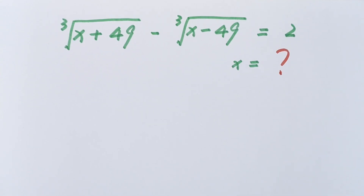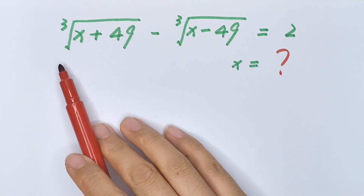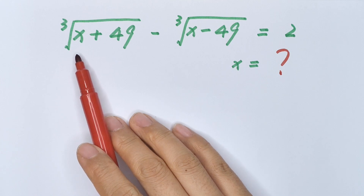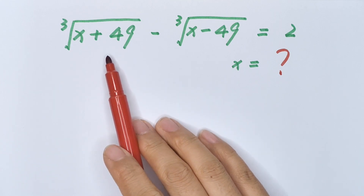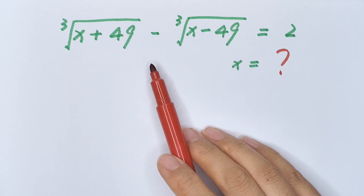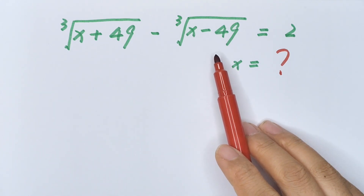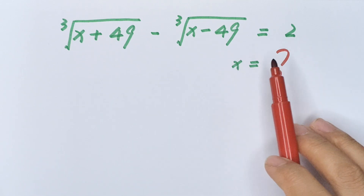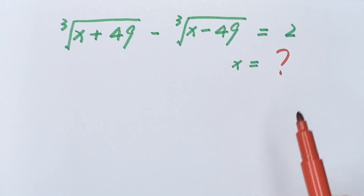Hello everyone, welcome to Math4U. How to solve: cube root of (x + 49) minus cube root of (x - 49) equals 2?